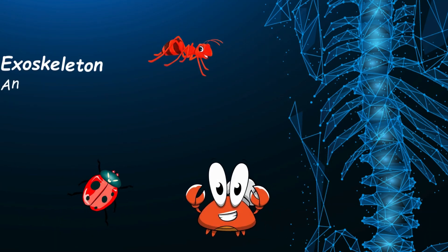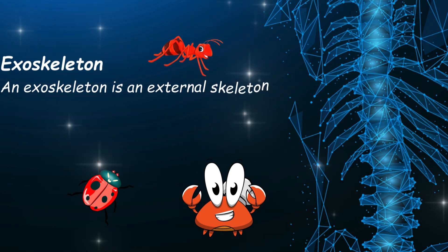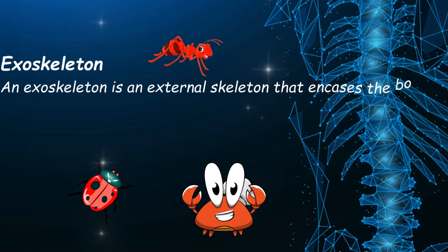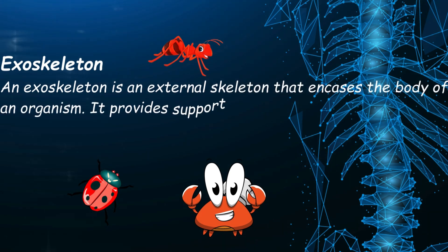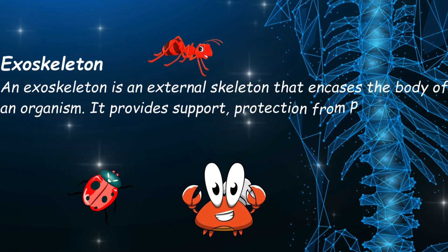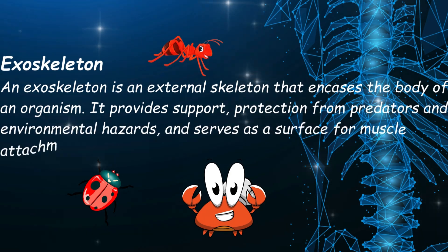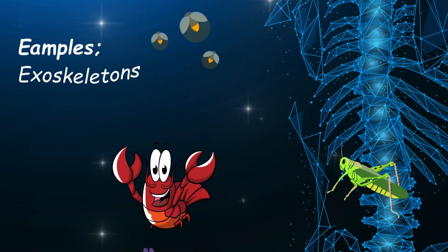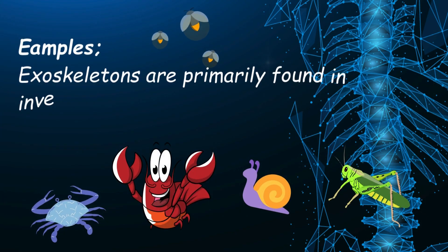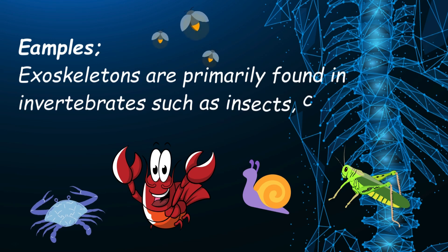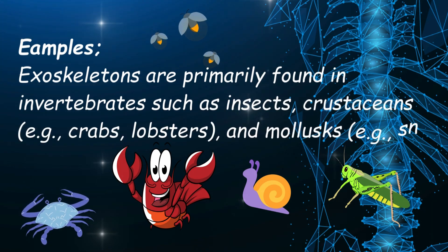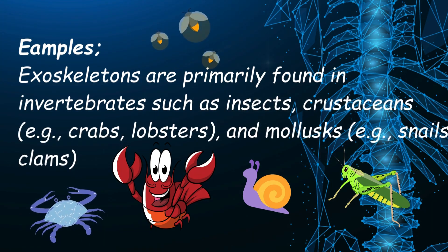Kids, an exoskeleton is an external skeleton that encases the body of an organism. It provides support, protection from predators and environmental hazards, and also serves as a surface for muscle attachment. Exoskeletons are primarily found in invertebrates such as insects, crabs and lobsters, snails, clams, etc.